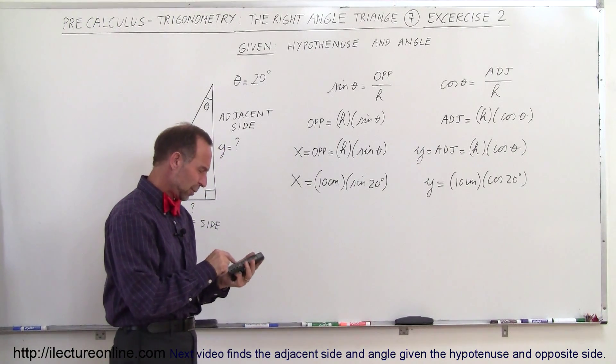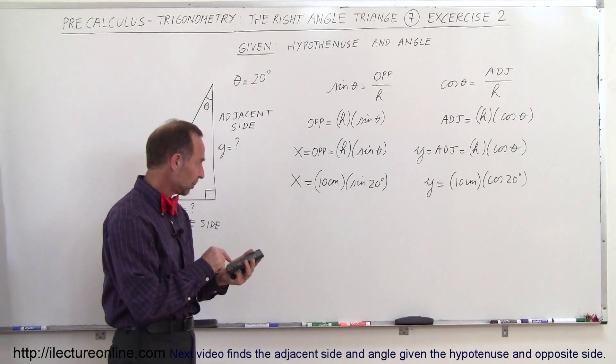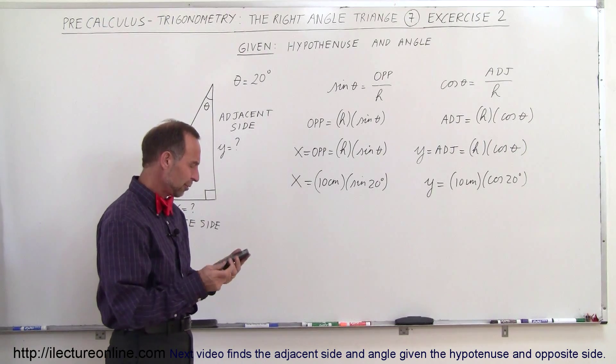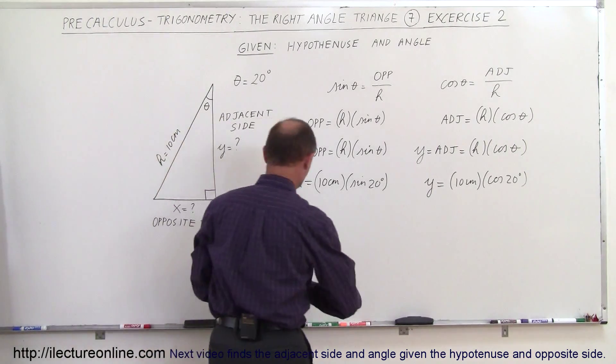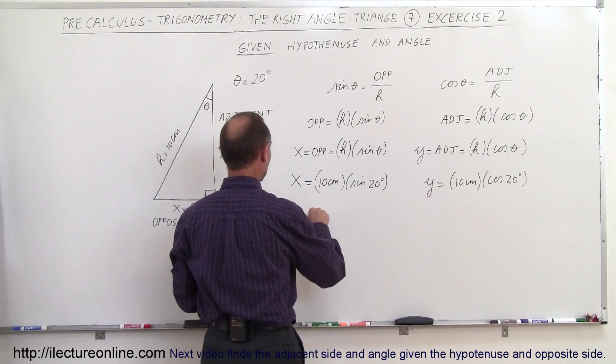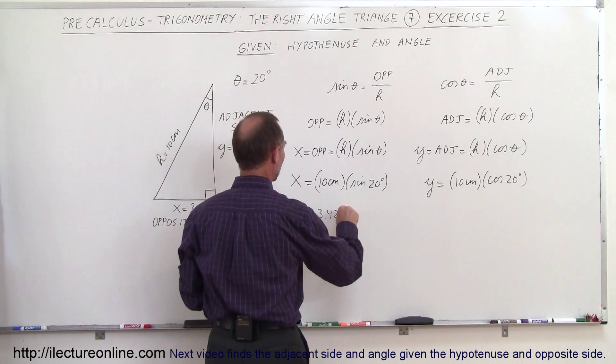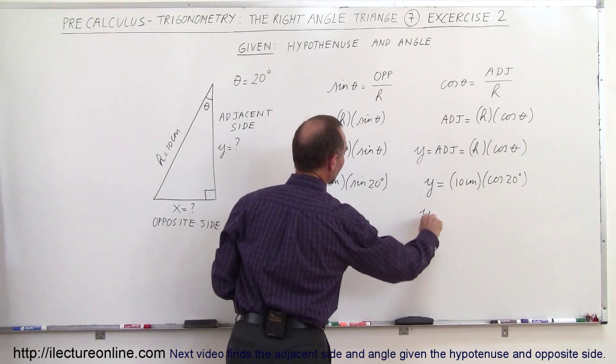So we take the sine of 20 and we multiply that times 10 and we get 3.42 centimeters. So x is equal to 3.42 centimeters and we do the same for y.